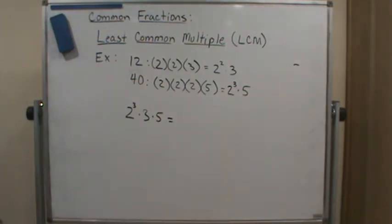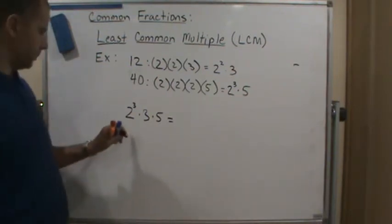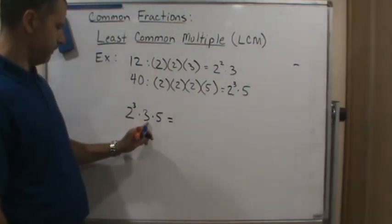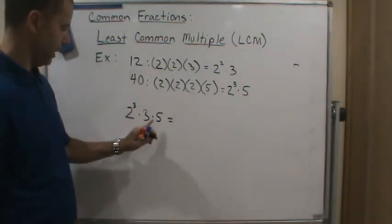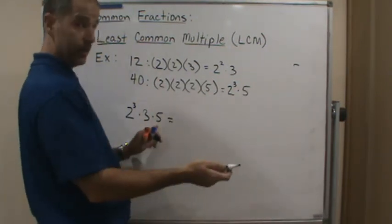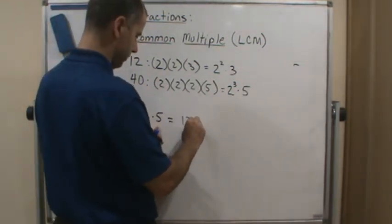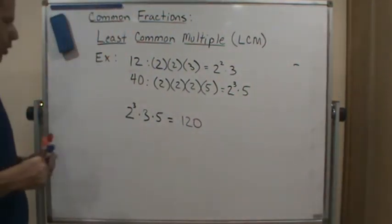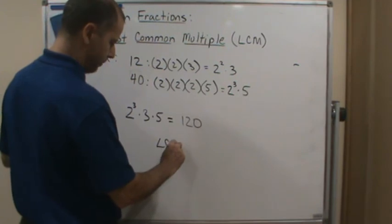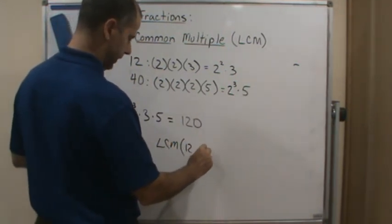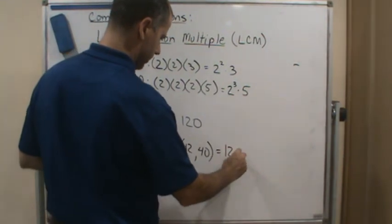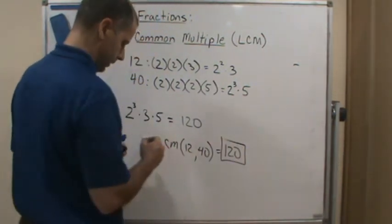And what does that give me? Well, if I multiply this, this is going to give me 8, then 24, and times 5 is going to give me 120. So the least common multiple of 12 and 40 equals 120.